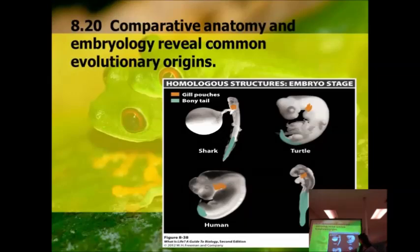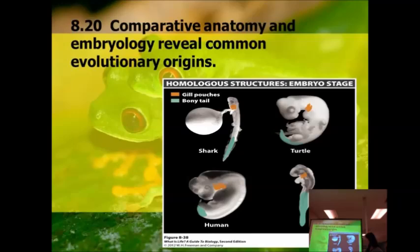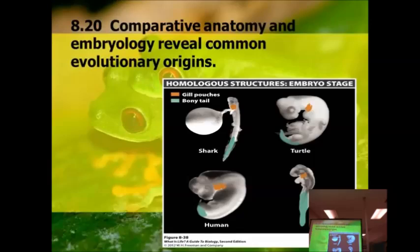We've got humans who have the gill pouches and a bony tail. As you all know by looking around, none of us have gills and none of us have tails. And a chicken has gill pouches and tails. So those things are not what they ultimately end up with, but they do show that we have similar evolutionary origins.